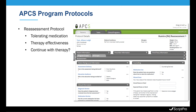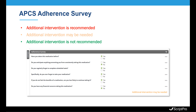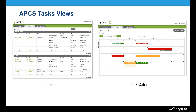Patient profile information along with prescriber and third-party information can be viewed when performing all assessments. We include an adherence survey at the end of each assessment protocol to help determine the potential need for early or additional intervention for a patient. The color score will change based on responses to the survey questions, where red represents additional intervention is required, yellow represents additional intervention may be needed, and green represents additional intervention is not recommended.